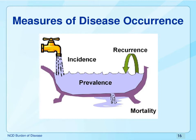Incidence refers to the number of new cases of a disease that occur during a specific period of time in individuals who were previously disease or disability free. Let me repeat that: incidence is the number of new cases of disease that occur during a specific period of time in individuals who were previously disease or disability free — in other words, people who were healthy previously. Looking at the graphic of the bathtub, these new cases are being fed into the pool of people who have a disease, disability, or risk factor — and the key thing is that they are new, just as water flowing from the tap into the bathtub is new.